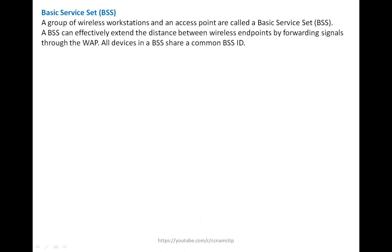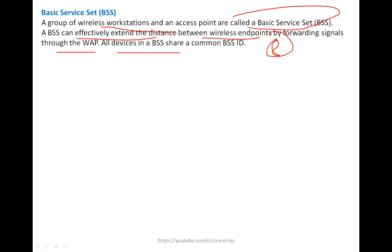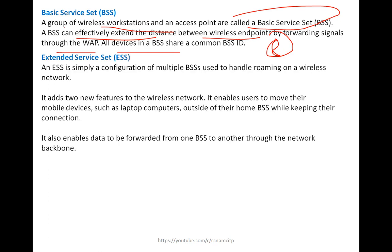Basic Service Set (BSS): a group of wireless workstations and access points is called a Basic Service Set. BSS can effectively extend the distance between wireless endpoints by forwarding signals through a WAP. All devices in a BSS share a common BSS ID. Extended Service Set (ESS) is a configuration of multiple BSSes used to handle roaming on wireless networks. ESS enables users to move their mobile devices outside of their home BSS while keeping their connection, and also enables data to be forwarded from one BSS to another through the network backbone.